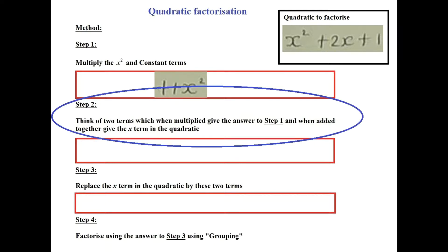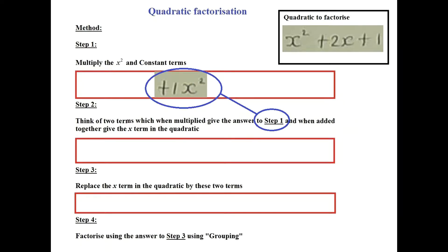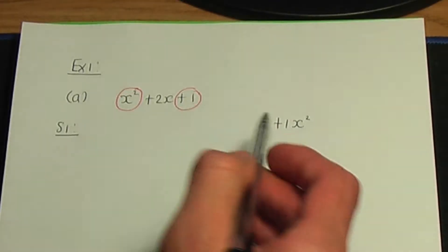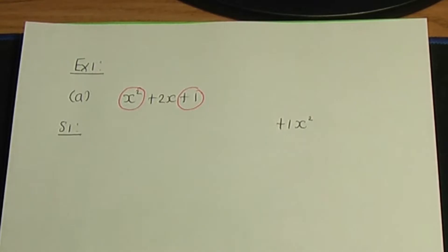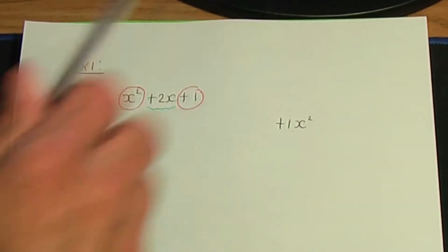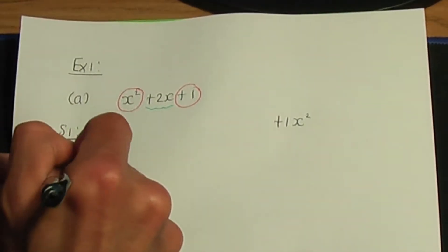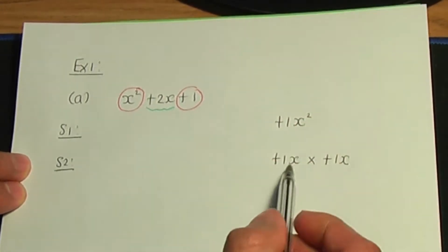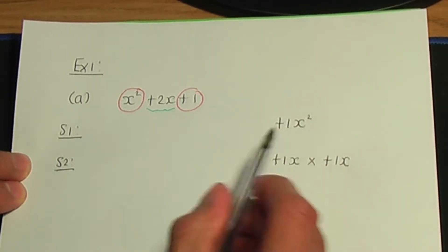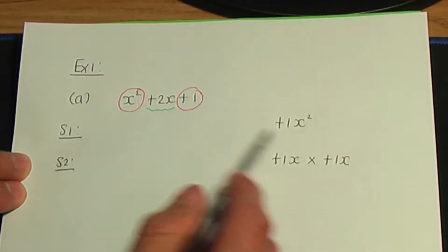Step number 2: we need to think about two terms which, when multiplied, give the answer to step number 1, and when added together, give the x term in the quadratic. We need two terms that when multiplied give plus 1x squared, and when added give plus 2x. In this case, the two terms are plus 1x and plus 1x.